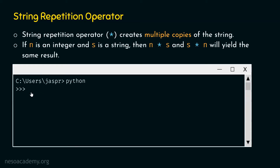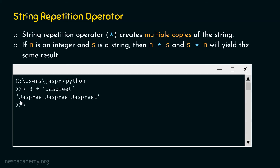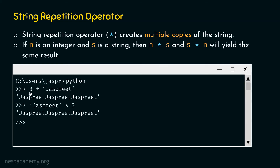I am in my interactive shell and ready to type the command. Let's type 3 star 'jaspreet'. Here n is 3 and s is the string 'jaspreet', so 3 star 'jaspreet' will create 3 copies of 'jaspreet'. We will not get separate copies — we will get the concatenated result: 'jaspreetjaspreetjaspreet'. If we type 'jaspreet' star 3, we will get the same string again. It does not matter which order we write; both n star s and s star n give the same result.